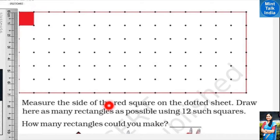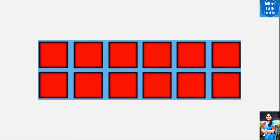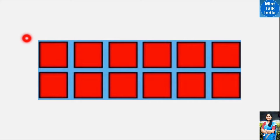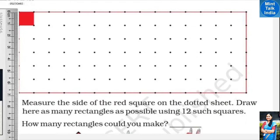After that, the question asks: draw here as many rectangles as possible using twelve such squares. This means we use twelve red squares to make big rectangles. Here we will see twelve squares — one through twelve. We will make so many rectangles that they fill the entire page.